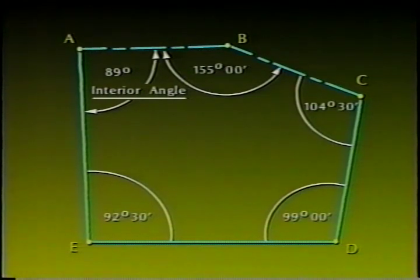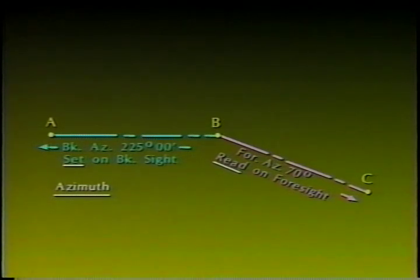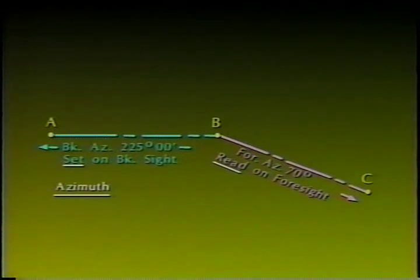Angles may also be in the form of direct azimuths. The horizontal circle is oriented on the backside with a record or calculated azimuth between the instrument station and the backside station. Any direct readings from the horizontal circle are then direct azimuths.